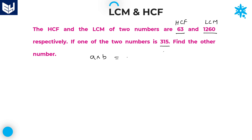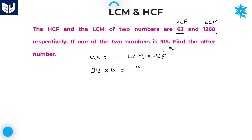Product of two numbers is equal to LCM into HCF. Substitute all the values of LCM, HCF, as well as the first number. Once you substitute all three, it is easy to find the second number. First number is 315, second number B we need to calculate, LCM is 1260, and HCF is 63.